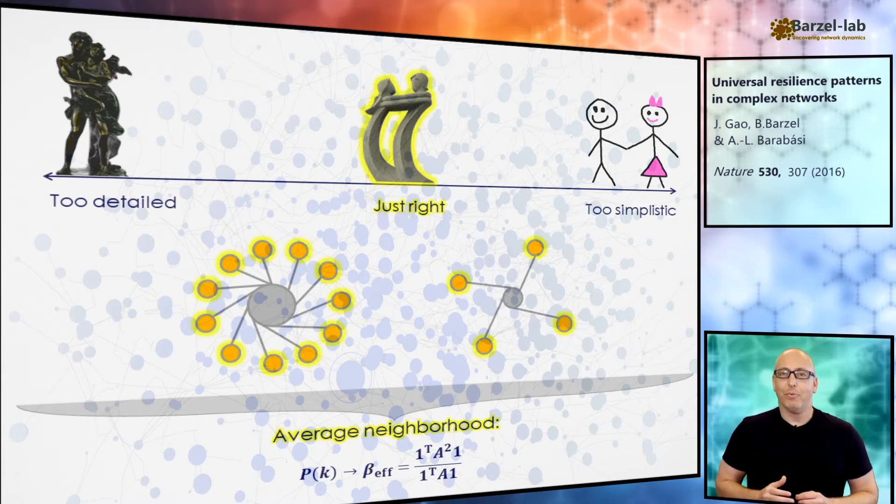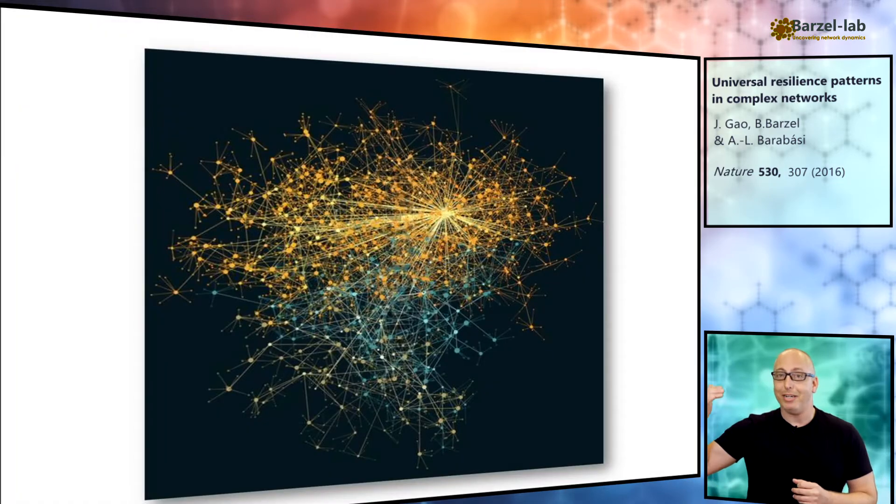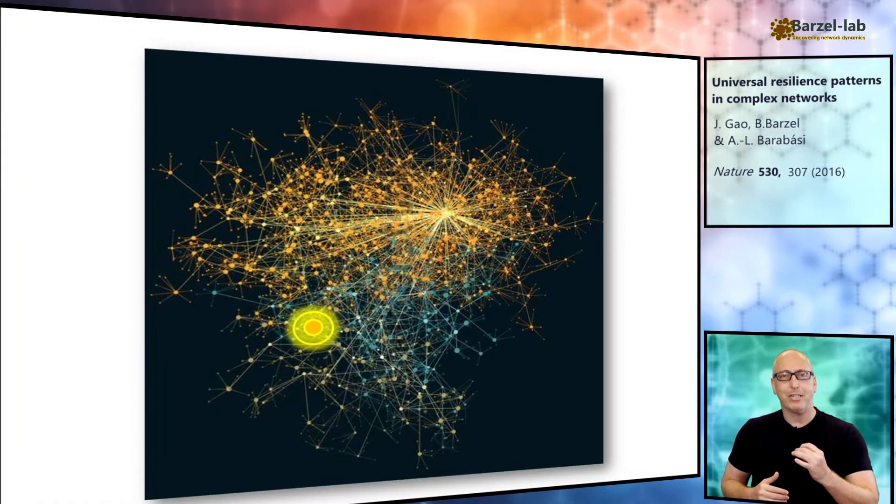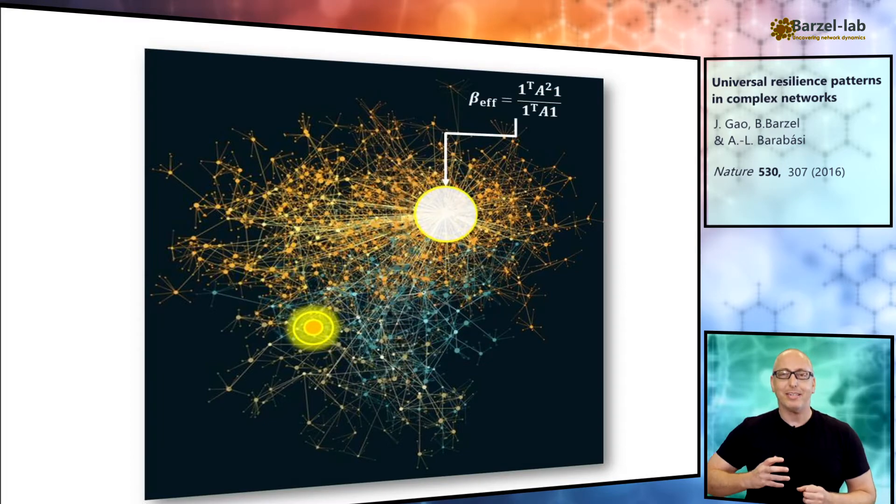With this in mind, what we need is to map the behavior of the average neighborhood. The idea is that the only information that a node has about the state of the network, for example, that there was a failure or extinction somewhere in the system, all of this information is mediated to the node by its direct neighborhood. So this is the natural control parameter of resilience. It is the effective beta parameter of our system.